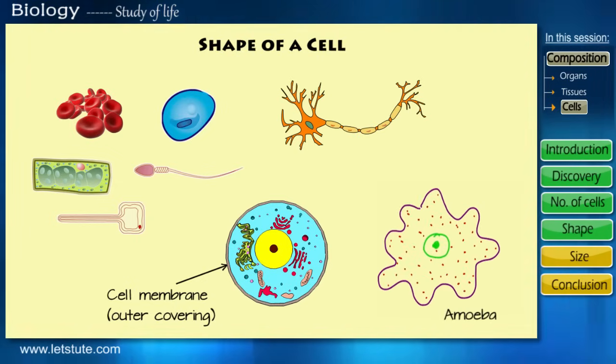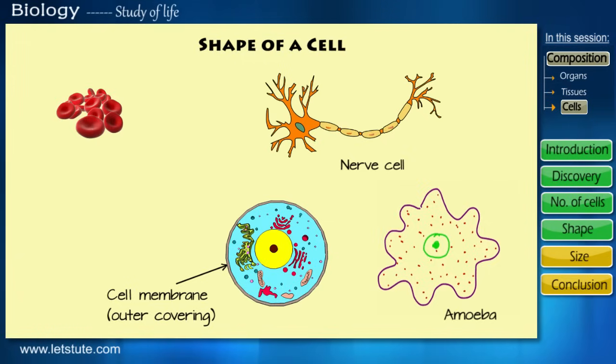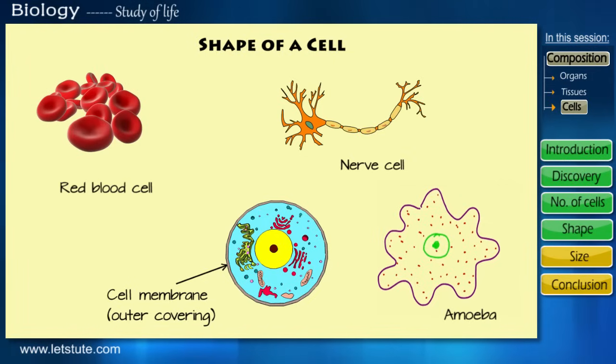Talking about shape of cells, a unicellular organism named amoeba has no definite shape. It is irregular and it keeps changing its shape. On the other hand, in multicellular organisms cells are of different shapes. For example, a nerve cell is long and branched in structure, while an RBC, that's a red blood cell, is spherical and concave.